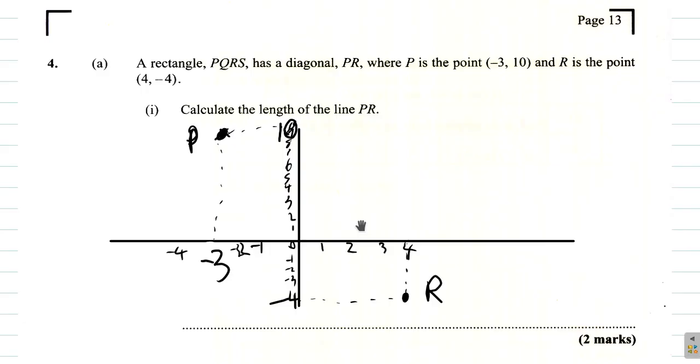So it has a diagonal PR. So that means the diagonal is this line there. Calculate the length of the line PR. You're going to see that you have a right-angled triangle here. You have PR. This is one side of the right-angled triangle, this is the other side. The right angle is right here. You want the length of it. Now you have a formula for the length of a straight line, but let's just derive it instead of trying to remember it.